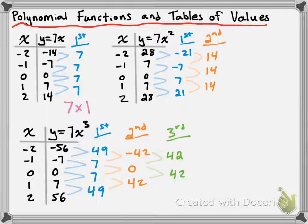Next, I'm going to get you to take a look at the second table of values. We have y equals 7x squared, which is a degree 2 polynomial function. If you take a look at the first differences in blue there, we don't get constant first differences, as we'd expect for a quadratic function. But we do get constant second differences, and I want you to notice that they're equal to 14. I'm going to rewrite that second difference as 7 times 2 times 1.